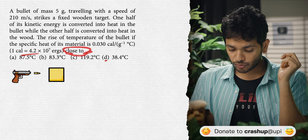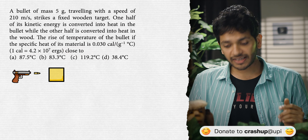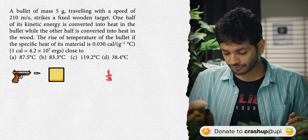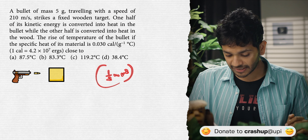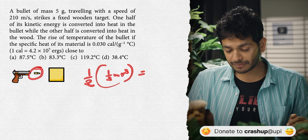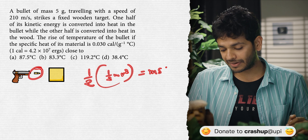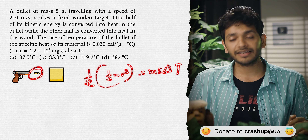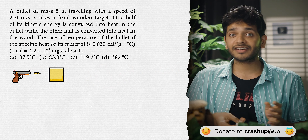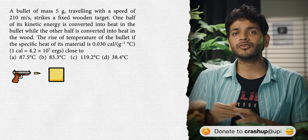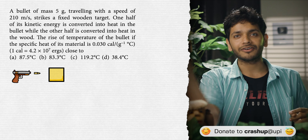What you need to do here is: half of the total kinetic energy, which was half mv², will be used in ms∆T. Keep track of units. Pause the video and solve the question.